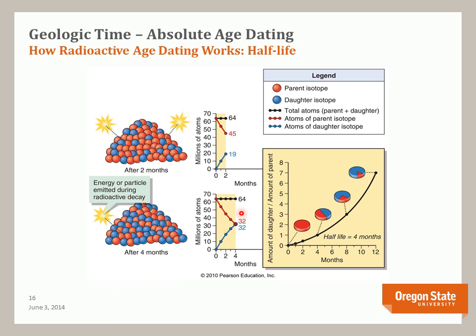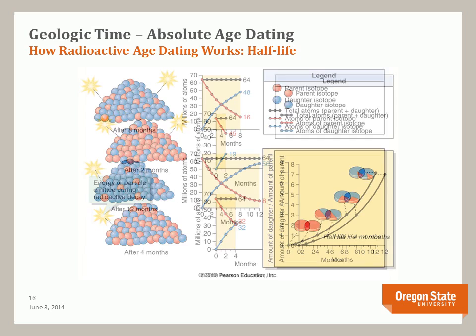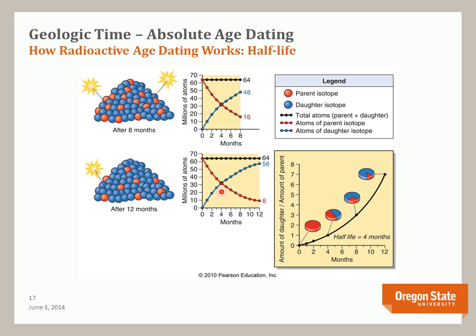The point at which parent and daughter are equal is an important value called the half-life. For this idealized model, the half-life of the parent isotope is four months. With continued decay, the curves start to flatten — we have fewer parent atoms, and because it decays by half each time, the curve becomes parallel to the axis. The important value to note is the half-life: when everything is equal, that is the half-life for this isotope.